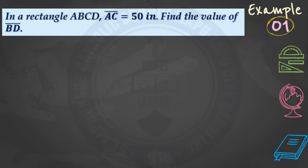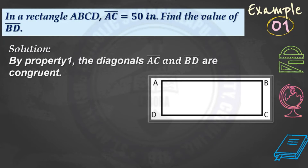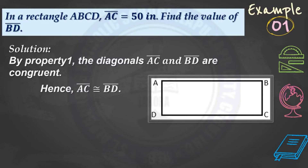In rectangle ABCD, segment AC is equal to 50 inches. Find the value of segment BD. If you try to look at the figure, segment AC and segment BD are the diagonals of rectangle ABCD. For the solution, by Property 1, the diagonals AC and BD are congruent. So if they are congruent, their measurements must be equal. Hence, segment AC is congruent to segment BD. Therefore, BD is 50 inches.